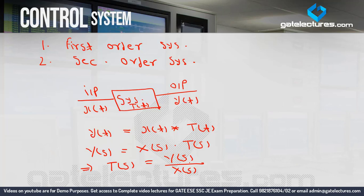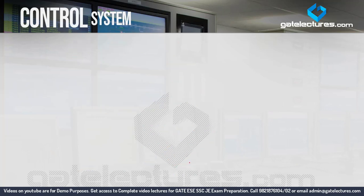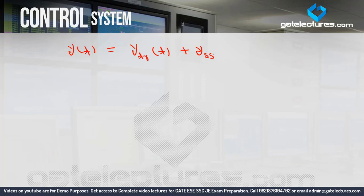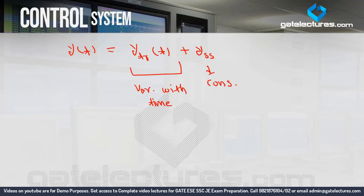T(s) is called the transfer function of the system. The transfer function is the ratio of output Laplace transform divided by input Laplace transform, with all initial conditions equal to zero. Now if we analyze the system output in detail, the system's response actually has two parts: one is the transient part, which varies with time, and the other is the steady-state part, which remains constant with time.